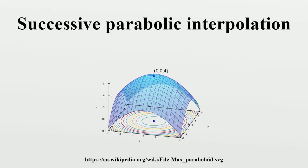Alternating the parabolic iterations with a more robust method to choose candidates can greatly increase the probability of convergence without hampering the convergence rate.